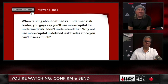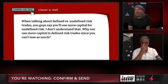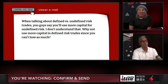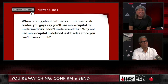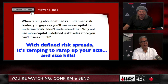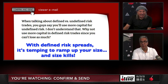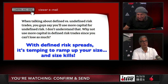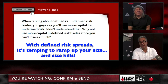When talking about defined versus undefined risk trades, you guys say that you'll use more capital for undefined risk, but I don't understand that. Why not use more capital in defined risk trades since you can't lose as much? Because you'll be doing more contracts to match the amount of buying power of a naked option, and that size kills. It really comes down to a pretty simple answer — you just get too concentrated, too big in the product with defined risk.